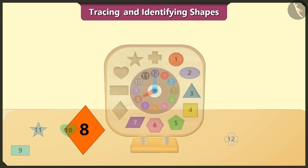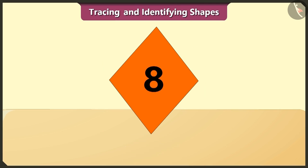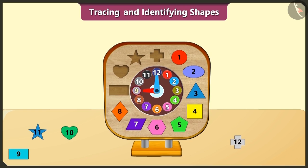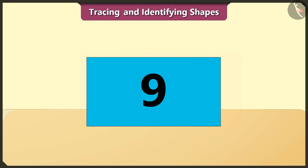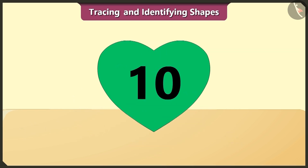The four-sided rhombus is eighth in order. And the rectangle is ninth in order here. Its opposite sides have the same length. The heart is tenth in order.